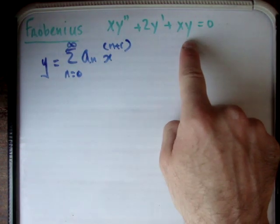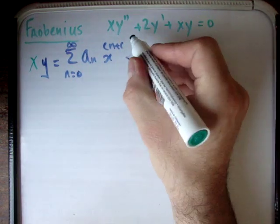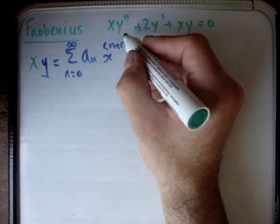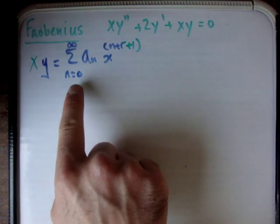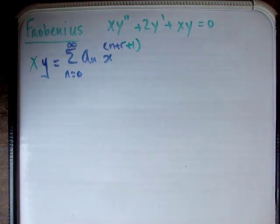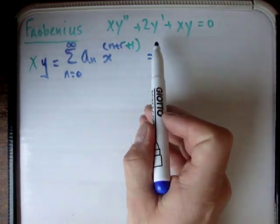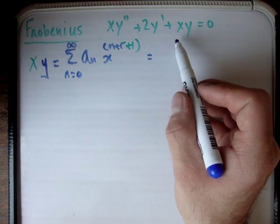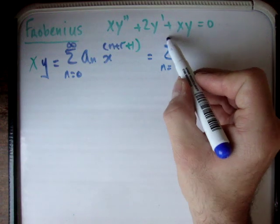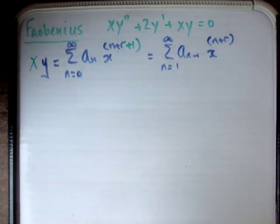The next thing we need to do is look at our power series and multiply y by x, which just shifts the exponent so the power becomes n+r+1. Remember, when solving differential equations using power series, all that matters is that all your power series begin at the same point and have the same power of x. For convenience, I'm going to have everything begin at x^(n+r). If you shift the index upward, the coefficient index goes downward, and vice versa — they're opposites. So the x·y term becomes the sum from n = 1 to infinity of a_(n−1) · x^(n+r), which is an equivalent expression.